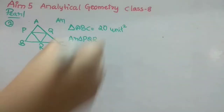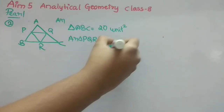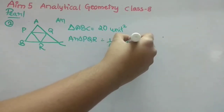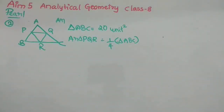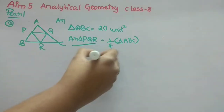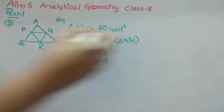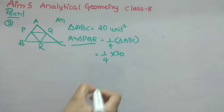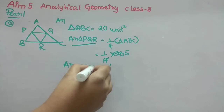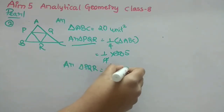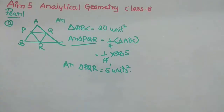The formula is: area of PQR equals one-fourth of the area of triangle ABC. So area of PQR = one-fourth of 20 = 5 square units. That is option B.